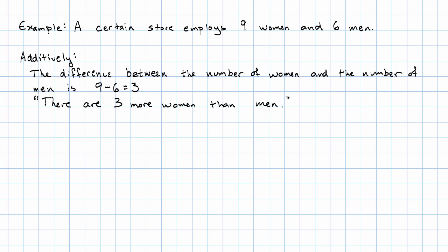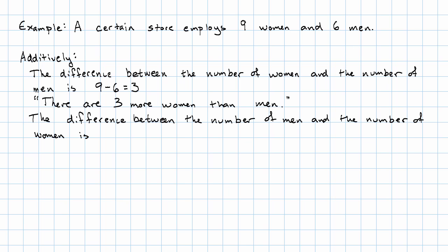If we wanted to describe this the other way around, we would say the difference between the number of men and the number of women is six minus nine equals negative three. In English, there are three fewer men than women. Notice the negative difference — we say there are fewer because there are fewer.